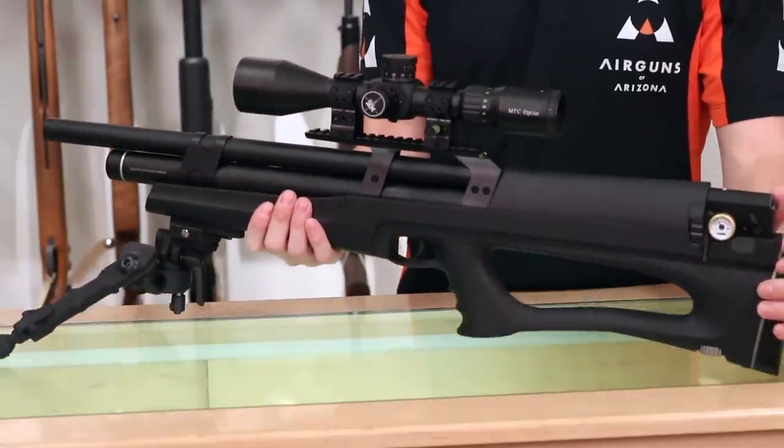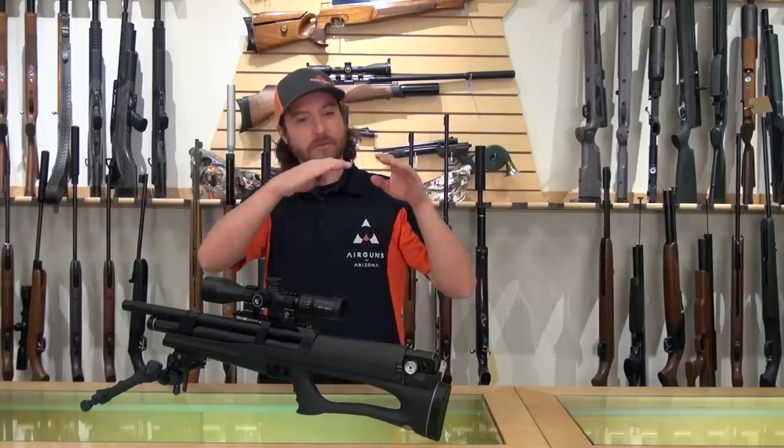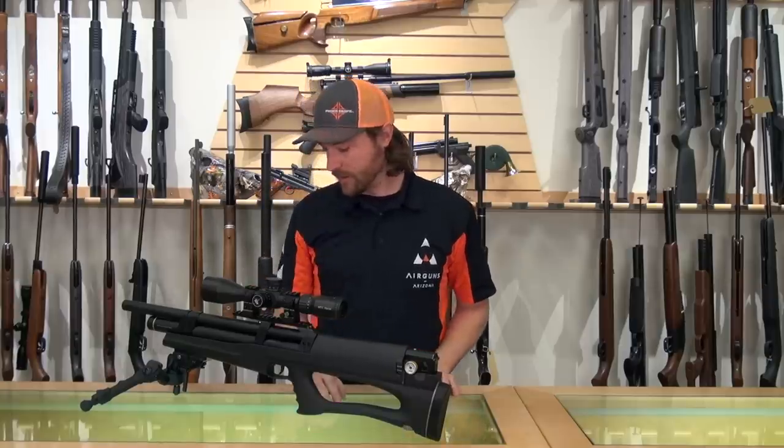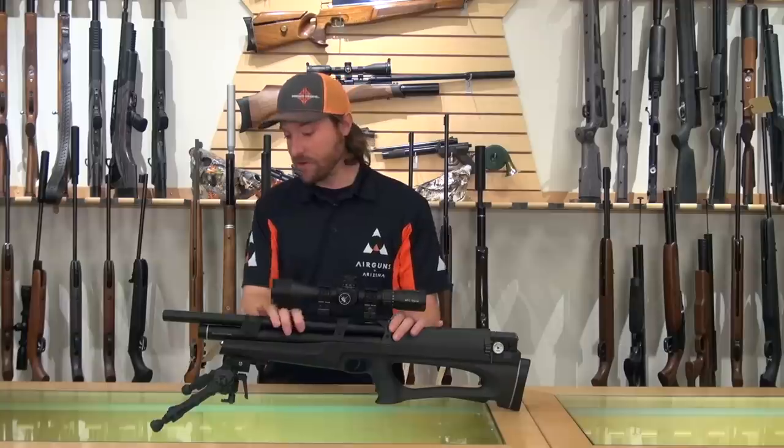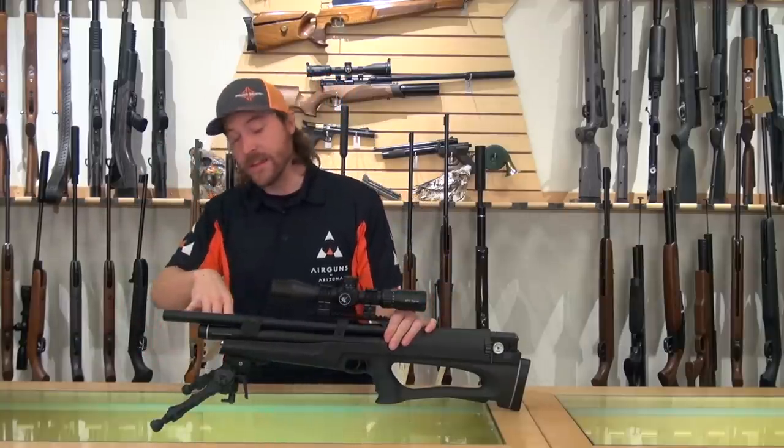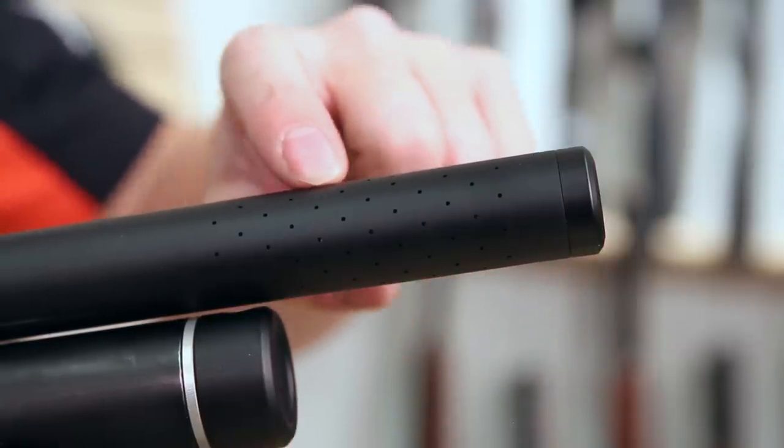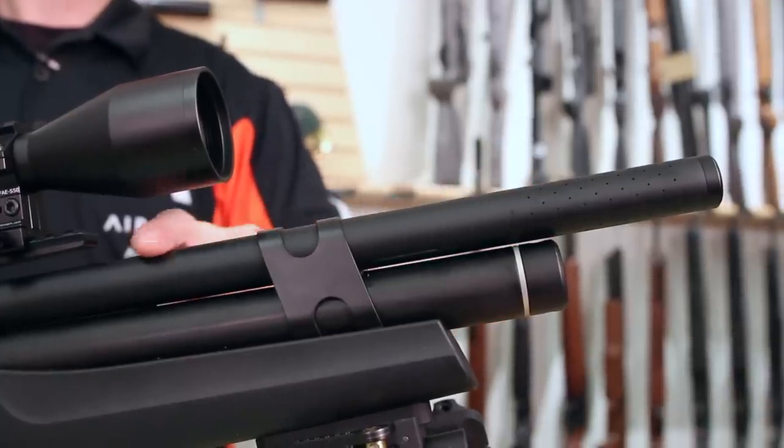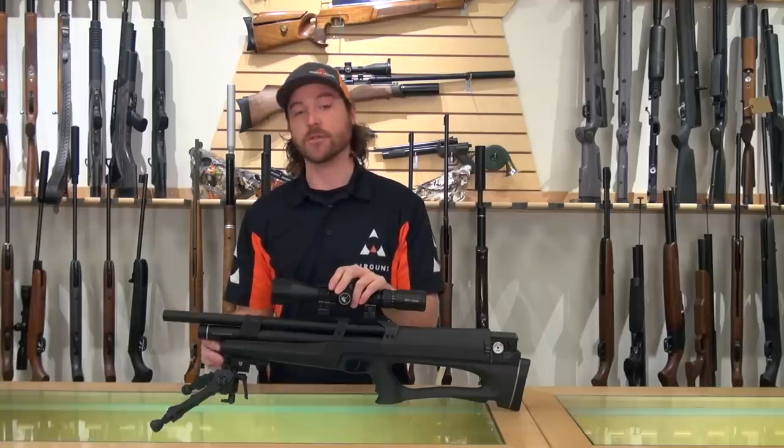This does use a Picatinny accessory rail. If we get in tight, you can see here that you have a bubble level that's built in right there. That's a good point to have for when you're shooting, you can see it out of your peripheral vision whether or not your gun is level. Right underneath the Picatinny scope rail, it is shrouded, fully shrouded. You can't actually see any of the barrel here. And then it's vented here at the end. I have this one set up to shoot right around 32 foot pounds of energy, 18 grain pellets moving at 850-900 feet per second. There's not much noise involved. The gun is capable of being cranked up pretty high, and once you do that, there's some inherent noise. But I would say out of the box, very quiet, very easy to work with for backyard use.